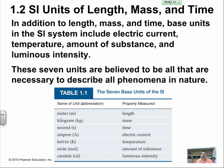In addition to length, mass, and time, base units in the SI system include electric current, temperature, amount of substance, and luminous intensity. These seven units are believed to be all that are necessary to describe all phenomenon in nature.